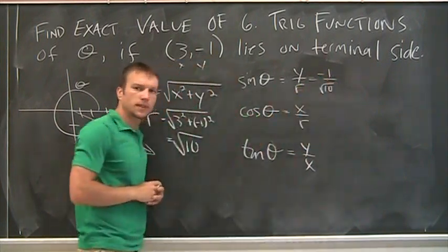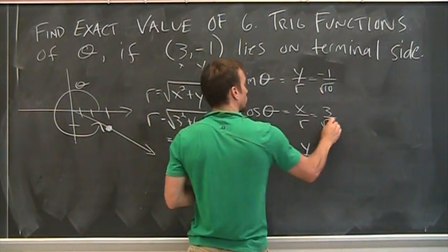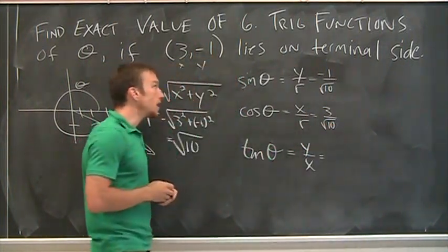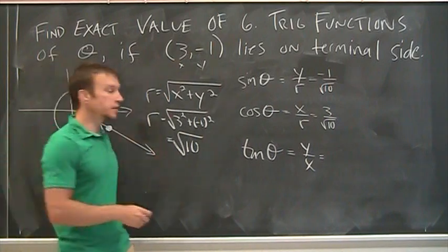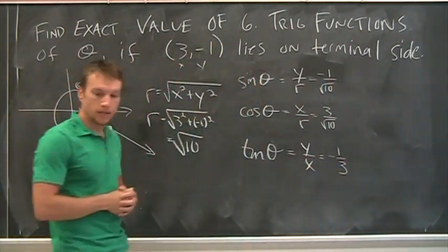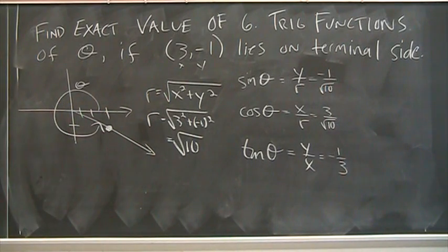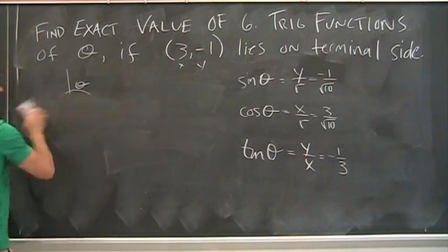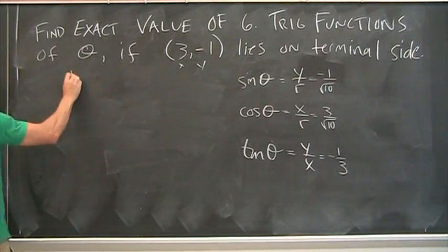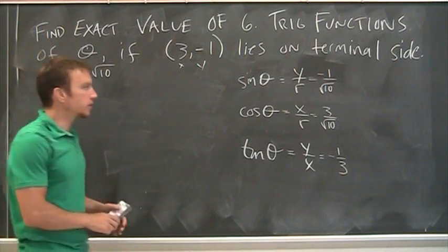The sine is negative 1 over root 10. I'm going to have to do something with that in a minute. Cosine is 3 over root 10, and the tangent is still negative 1 over 3. Okay? I'm going to go ahead and erase this, because we don't need it anymore. I know r is root 10. That's all I need. All right? We did find r to be root 10.